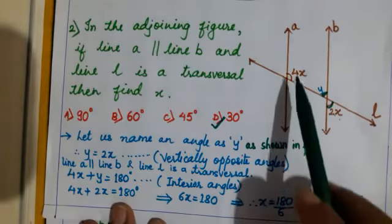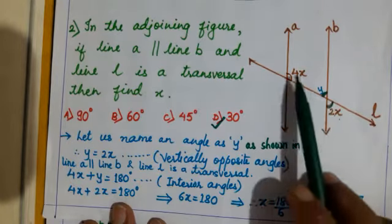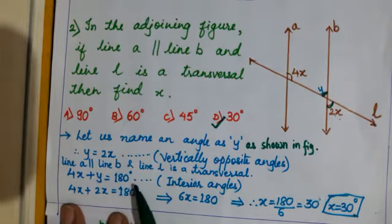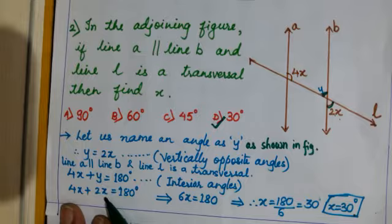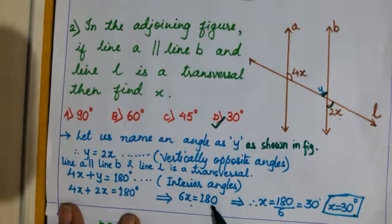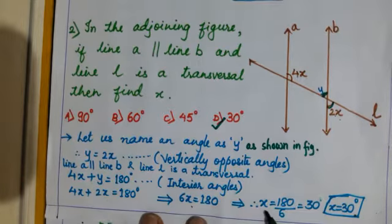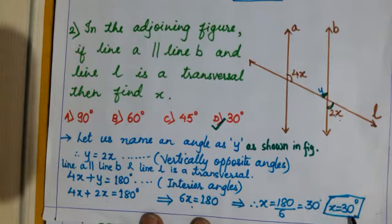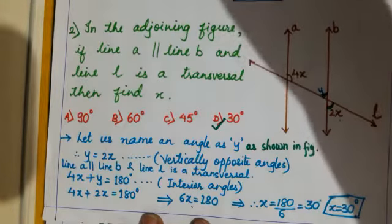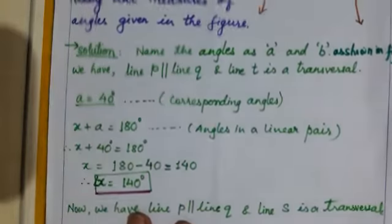Now 4x plus y are interior angles, so 4x plus y equals 180 degrees. Substituting y equals 2x: 4x plus 2x equals 180, so 6x equals 180, giving x equals 180 divided by 6, which is 30. So x equals 30 — option D is the answer.